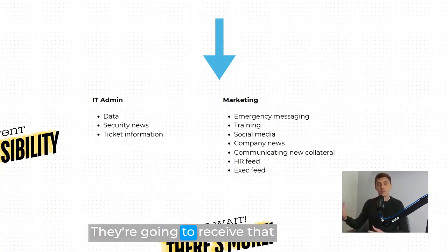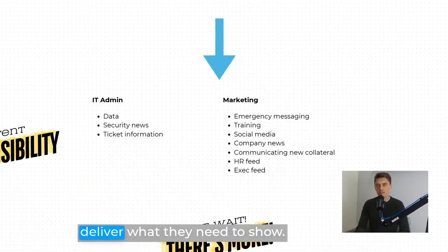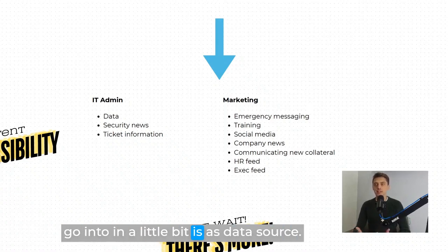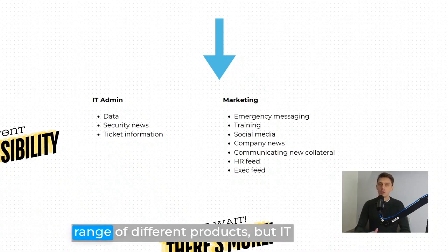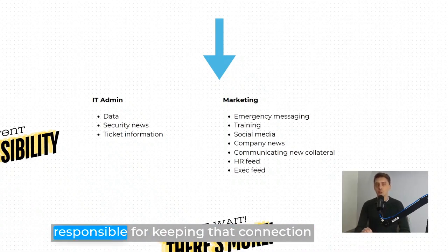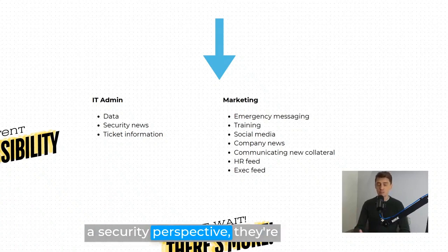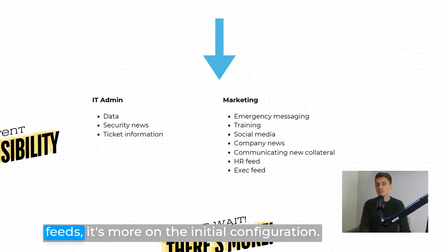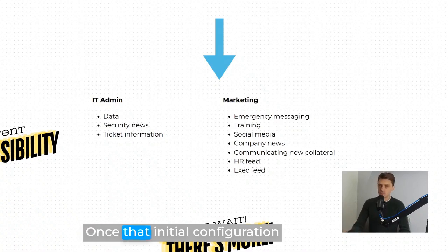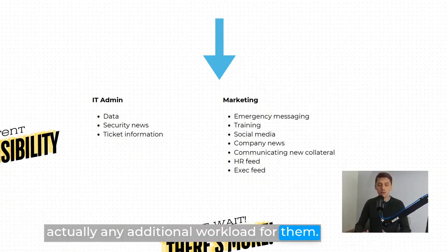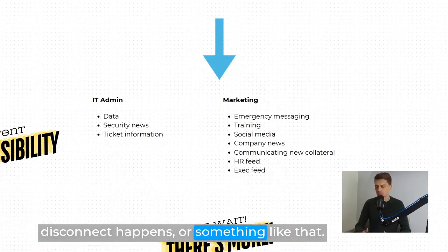The decision in this case is that marketing is going to take care of most of it: emergency messaging collateral, training videos, social media prep — which is an automated channel — company news, new collateral, HR feeds, and the exec feed where they receive information from the executive team and deliver what they need shown. Then IT admin looks after security news. And for data, you can pull things like Power BI, SharePoint, Tableau, Trello — a whole range. IT is responsible for keeping that connection live and managing the API, but once initial configuration is done, it's automated. So it's IT's responsibility but not additional workload.